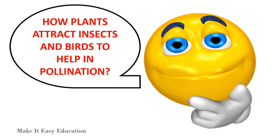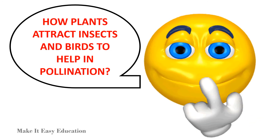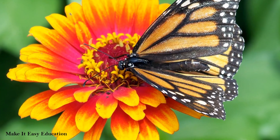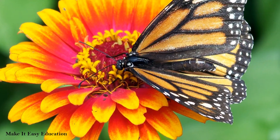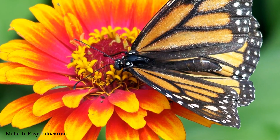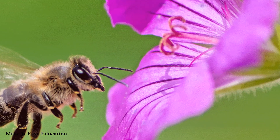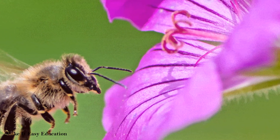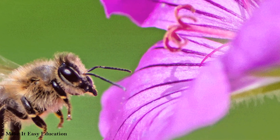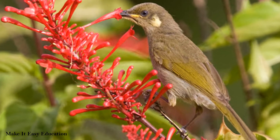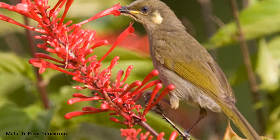Do you know how plants attract insects and birds to help in pollination? The bright, colorful petals of the flower attract insects and birds. The flower's fragrance also attracts insects. Birds and insects come to the flowers to collect nectar.